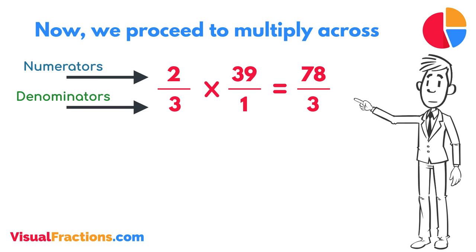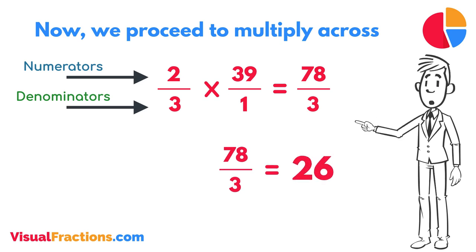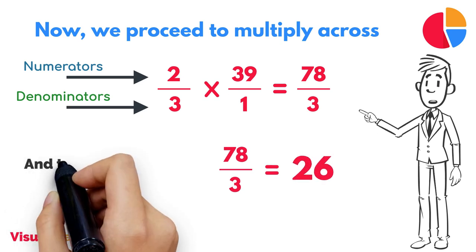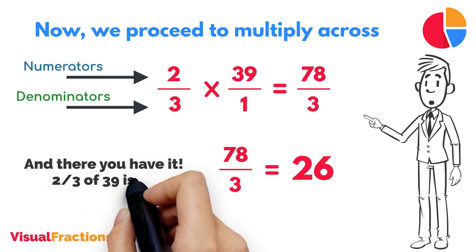To find the final answer, divide the numerator by the denominator. So, 78 divided by 3 equals 26. And there you have it. Two-thirds of 39 is 26.